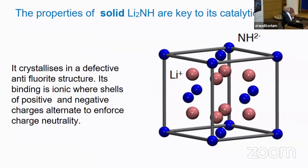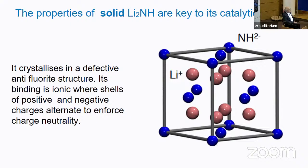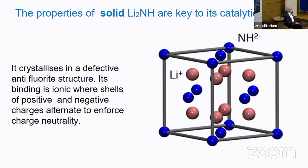We need to study this lithium imide. Typically when you look at catalysts they have a group of molecules with some chemical structure. Here, we have to worry about the solid state crystal of this compound. This is an ionic compound that crystallizes roughly in an anti-fluorite structure. You have the doubly charged species, then the lithium in tetrahedral positions. Like in ionic compounds, you want to preserve charge neutrality, and so there is an alternation of negative and positive charges to obtain local neutrality.